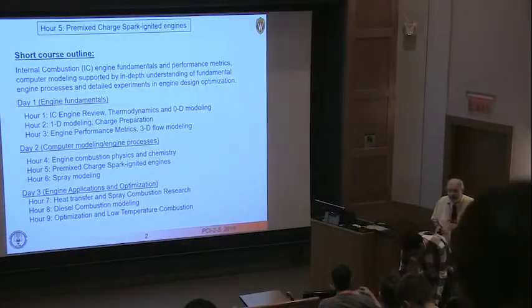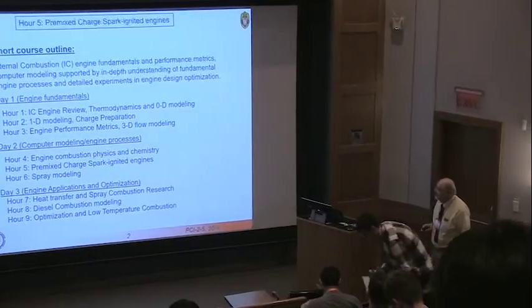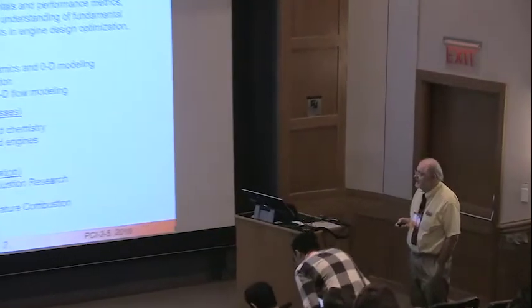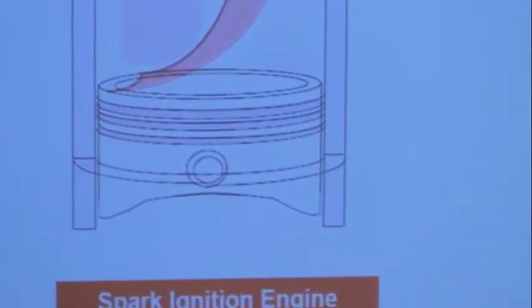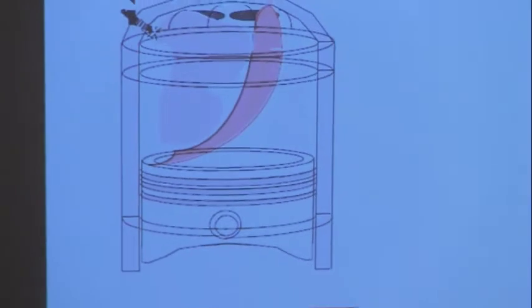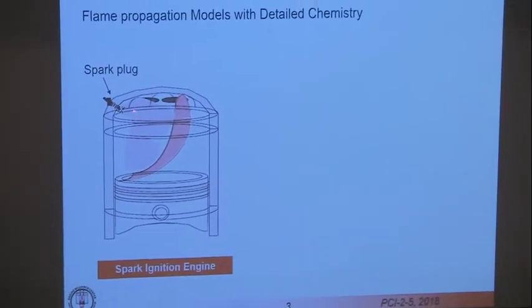What I'm going to be talking about next is a pre-mixed charge sparking mechanism. I'm going to review some of the details of combustion being very complicated, as you can see. The combustion process is very complicated. You kind of look at the spark ignition engine. As I mentioned, you start out with the spark, and you come to get more flame.